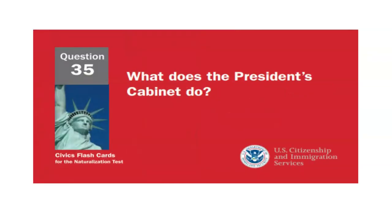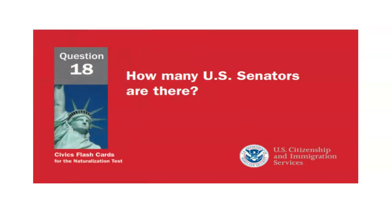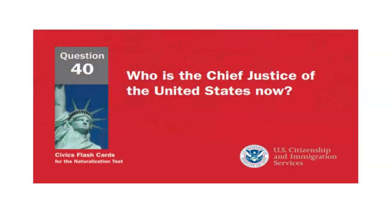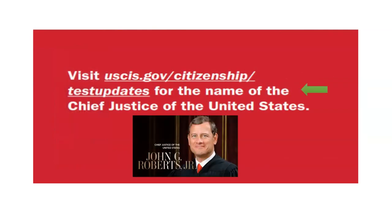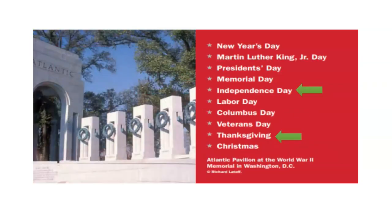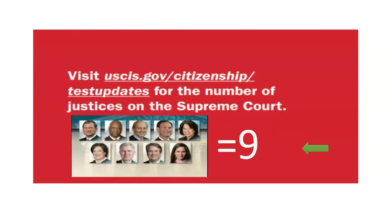What does the president's cabinet do? Advises the president. How many U.S. senators are there? One hundred. Who is the chief justice of the United States now? How many justices are on the Supreme Court? Nine justices.